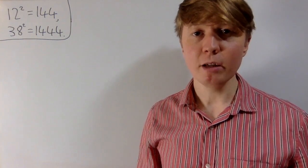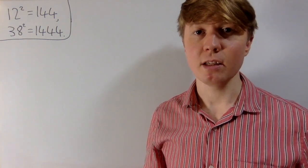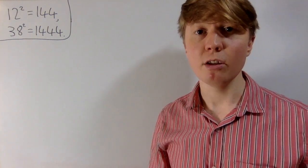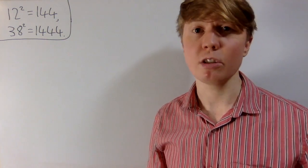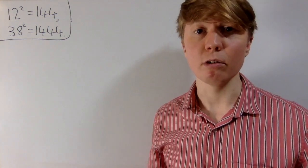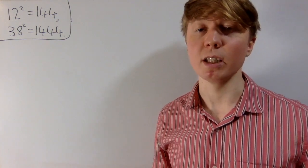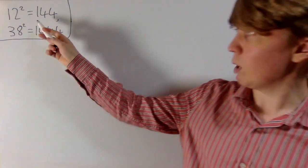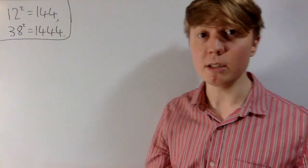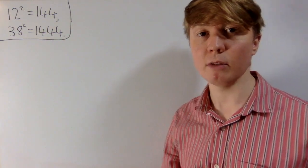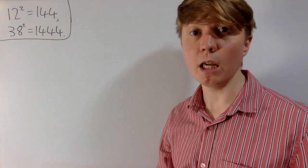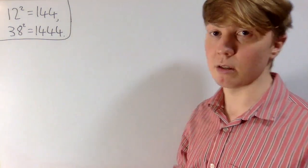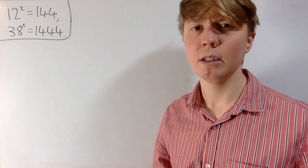We're going to look at square numbers with repeating digits at the end. We're only interested in non-zero repeating digits, because you can get repeating zeros easily by considering powers of 10. For example, 12 squared gives you two repeating 4s at the end. And if you go up to 38 squared, you can even have three repeating non-zero digits at the end.